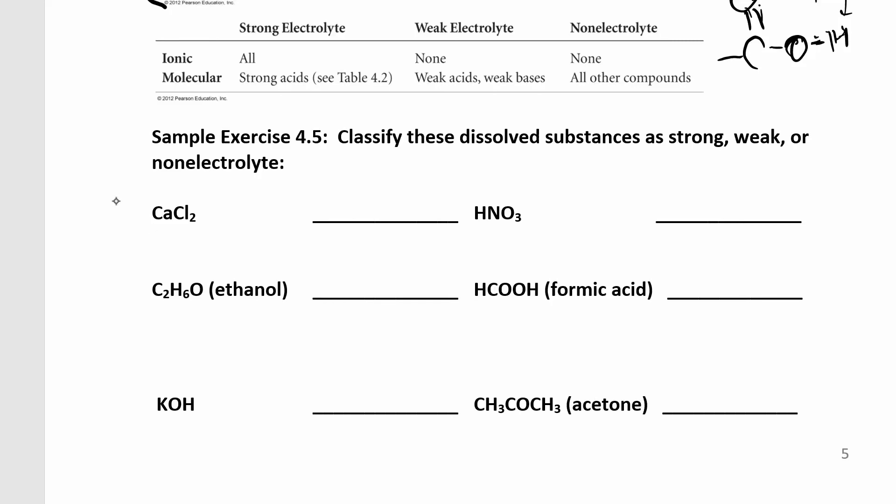So like calcium chloride, I know this is an ionic compound. So I can check to see if it's soluble. Calcium chloride, so chlorides are usually soluble except when silver, lead, and mercury. So this one is going to be an ionic compound, soluble ionic compound. So this would be a strong electrolyte because it's a soluble ionic compound.